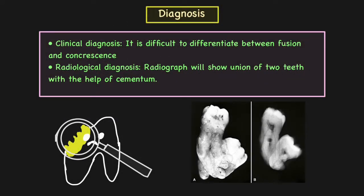Moving on to diagnosis. Clinically it is very difficult to differentiate between fusion and concrescence. Fusion can occur anywhere along the surface of the tooth, however concrescence occurs below the CEJ. Unless there is significant gingival recession we may not be able to see the CEJ, so clinical diagnosis cannot certainly tell us whether it is concrescence or germination. We must opt for radiological diagnosis, and after radiographic examination we can clearly see union between two teeth by means of cementum, with the roots of the teeth appearing completely fused with each other.